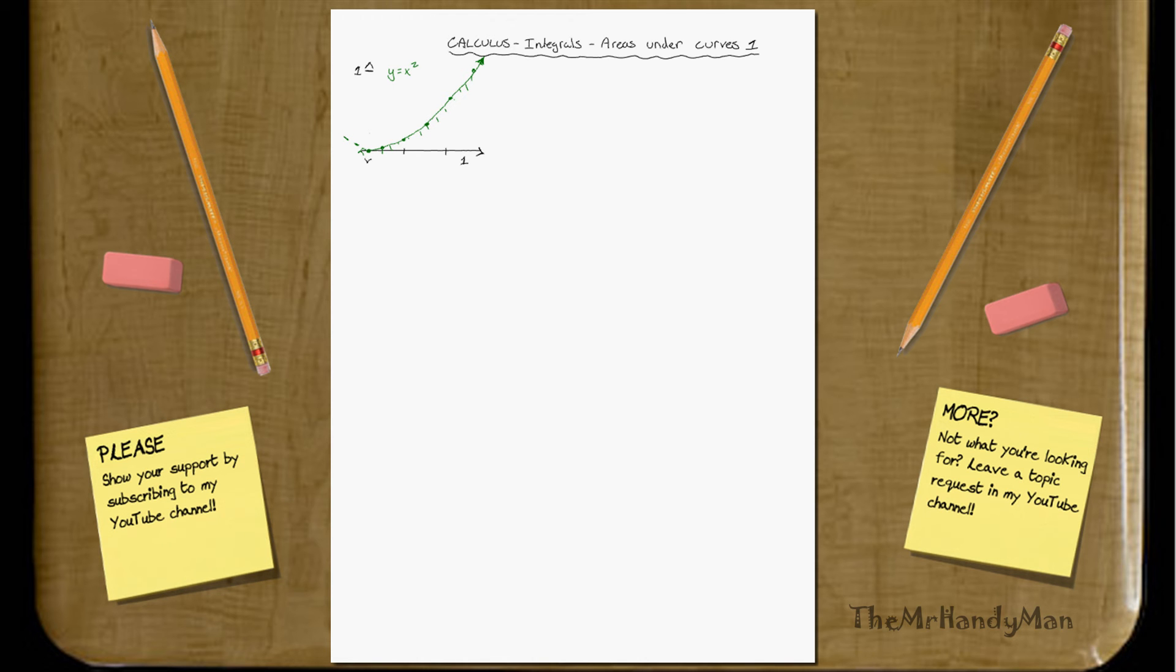So first of all, I just want to ask you, from 0 to 1, how would you determine, knowing what you know now, how would you determine this area right here? All the area between 1 and 0, how would you do that?